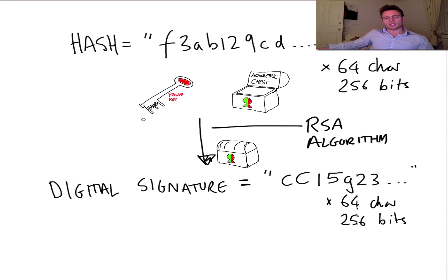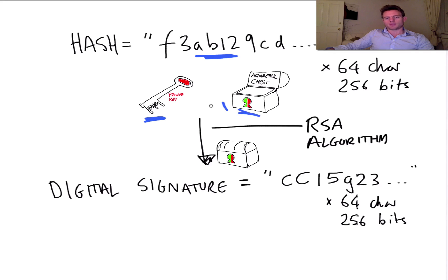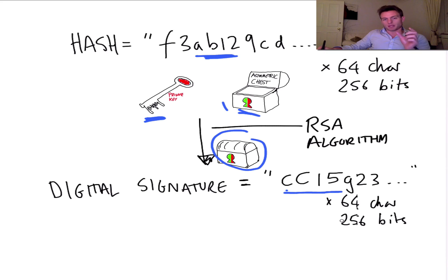Then what you would do is take this hash and — because Humpty is the one sending the document — he will use his private key to encrypt the hash value. Effectively, going back to the first video, he's locking that hash up in one of these asymmetric chests using his private key. That locked chest is effectively your digital signature. The encrypted hash using the private key — let's say it comes out as cc15g23 etc. — is still 256 bits or 64 hex characters, but it's been encrypted using the private key.